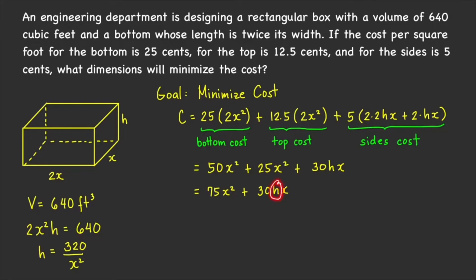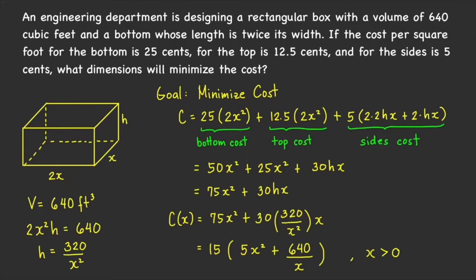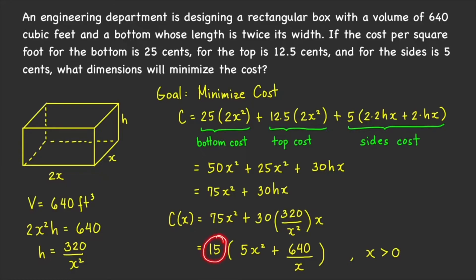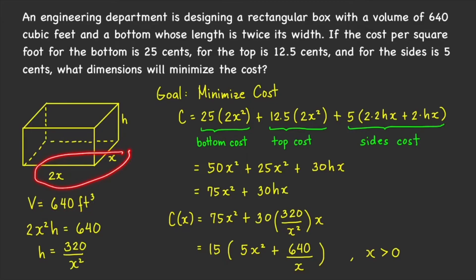Solving for h gives h = 640 / (2x²) = 320 / x². We substitute this into our cost expression, replacing h with 320/x², and factor out the common factor 15 to make differentiation easier. We can now write C as a function of x alone: C(x) = 15(5x² + 640/x). The domain is x > 0, since x = 0 would make the volume equal to 0.